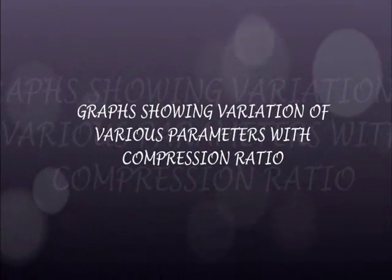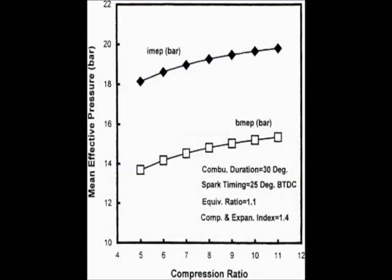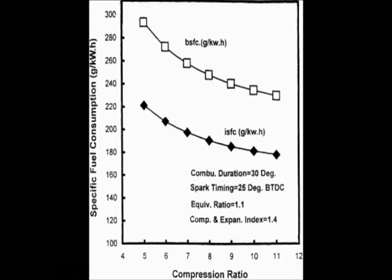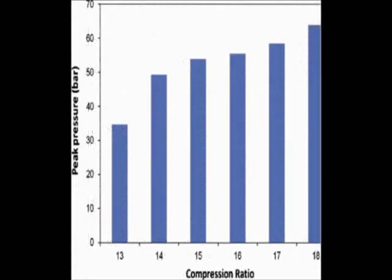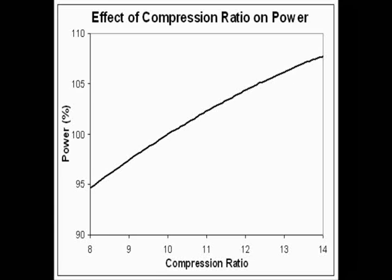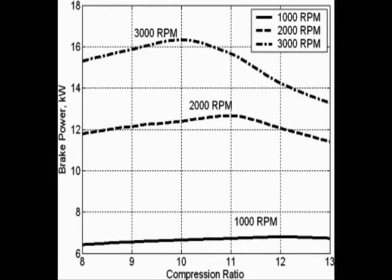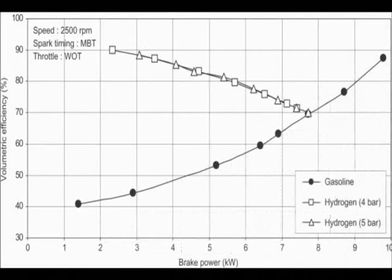Several graphs are presented showing the variation of parameters with compression ratio: the variation of mean effective pressure with compression ratio, specific fuel consumption with compression ratio, peak pressure with compression ratio, power with compression ratio, brake power with compression ratio, and finally, volumetric efficiency with brake power.